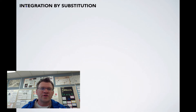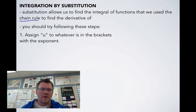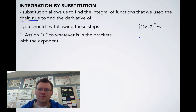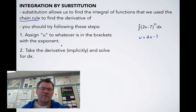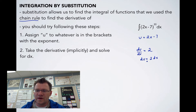Our second method for integration is integration by substitution. Substitution allows us to find the integral of functions that we use the chain rule to find the derivative of — so this is sort of the opposite of the chain rule. Step one: assign u to whatever's in the brackets with the exponent. For our example, we call u = 2x - 7. Step two: take the derivative implicitly and solve for dx. So du/dx = 2, which gives du = 2dx, and therefore dx = (1/2)du.